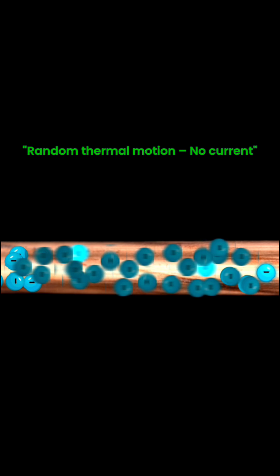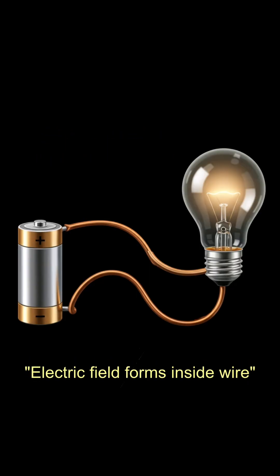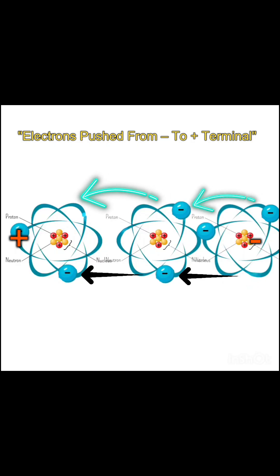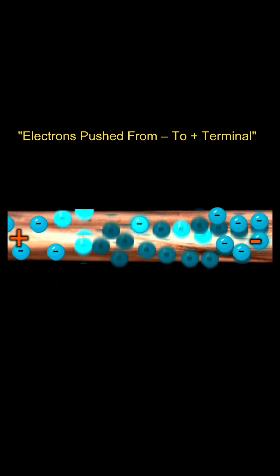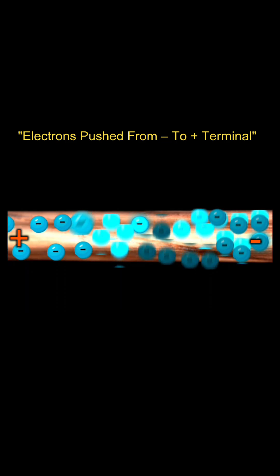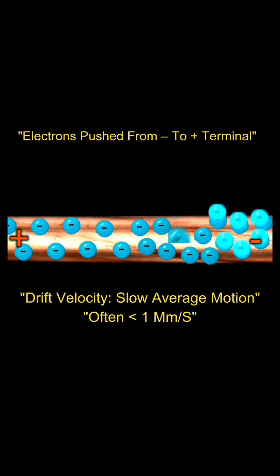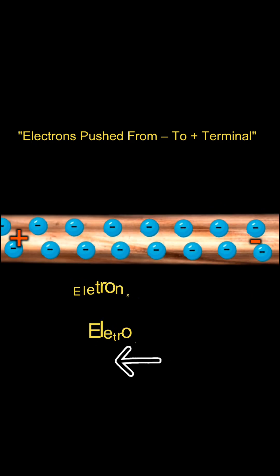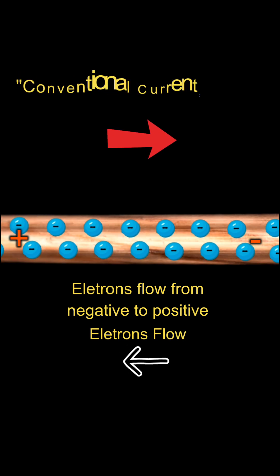No current. When we apply a potential difference — like connecting a battery — an electrical field is created inside the wire. This field pushes the free electrons. Given their random thermal motion, a small net drift occurs from the negative terminal to the positive terminal. This small average motion is called drift velocity.